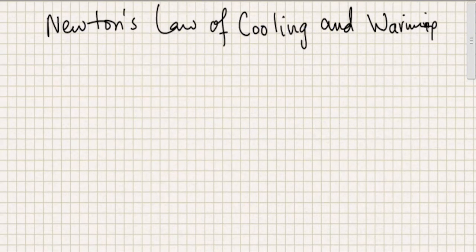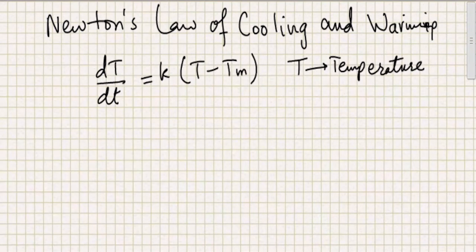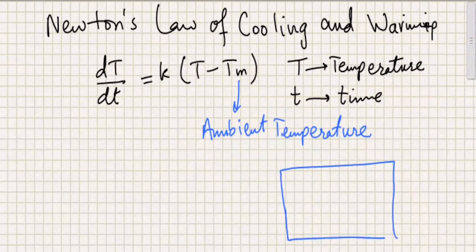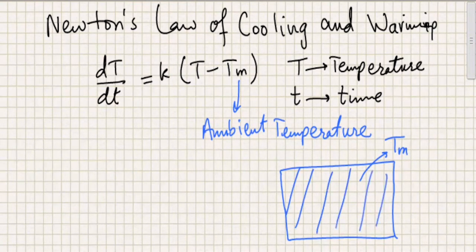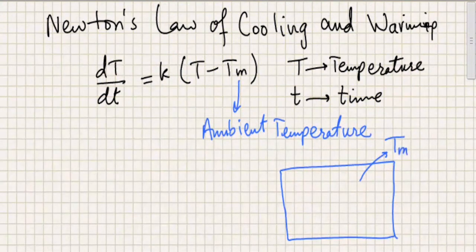This is a standard law devised by Newton, and the law says that dT/dt equals k times (T minus Tm). Capital T represents temperature and small t represents time, and this k is a constant of proportionality. Tm is the ambient temperature — for example, in an enclosed area where the temperature is maintained constant, that is the ambient temperature. Anywhere throughout this space the temperature is everywhere Tm.